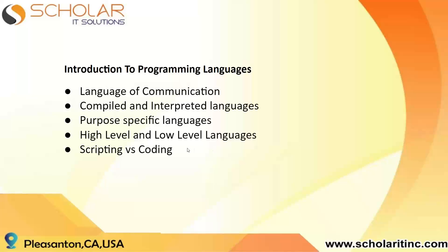High-level languages — like Python, C, C++, and Java — are easy to understand for a human being because they are written in words we can understand. Low-level languages are written in assembly code. Anytime you write in a high-level language it's eventually translated into a low-level language and fed into the computer. One important distinction is scripting versus coding. A lot of people think both are the same, but they are not. Scripting is when you add code to an existing application.